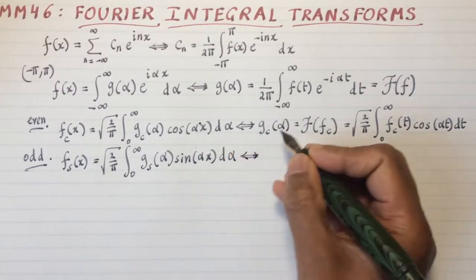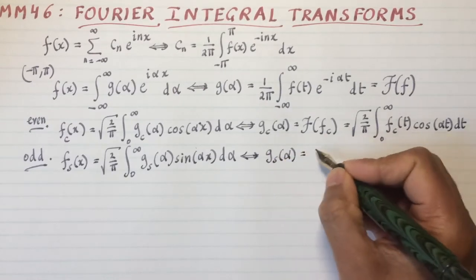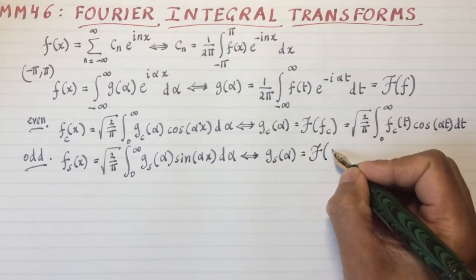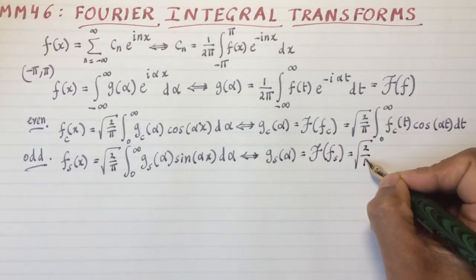And then the corresponding functions gs alpha would be the Fourier integral transform of f sub s. And word for word, it's the same thing.